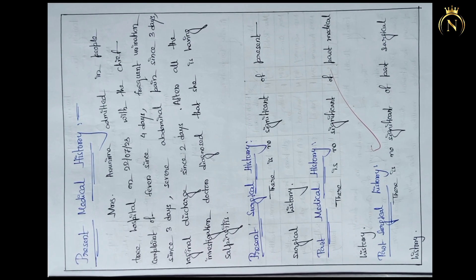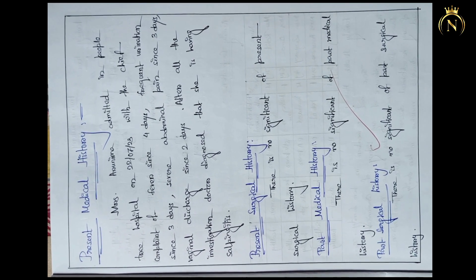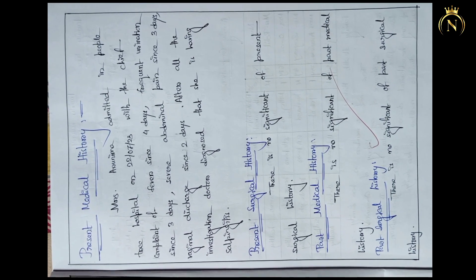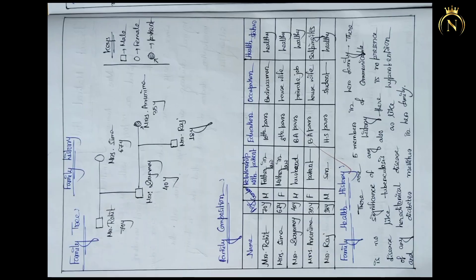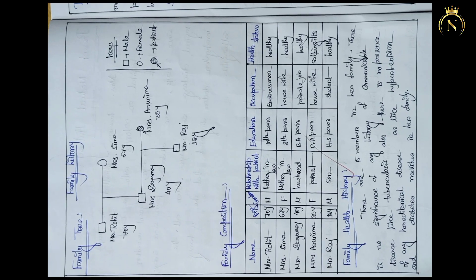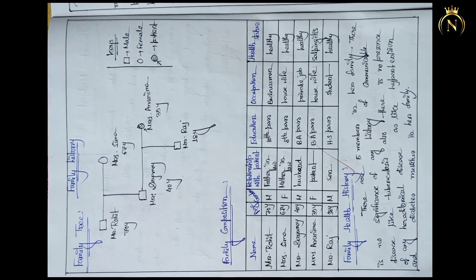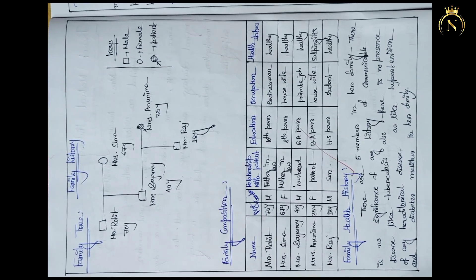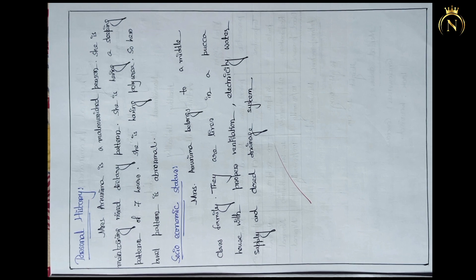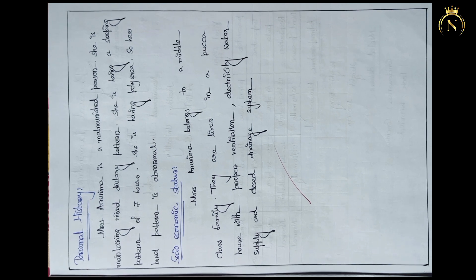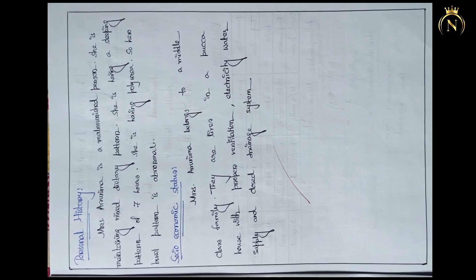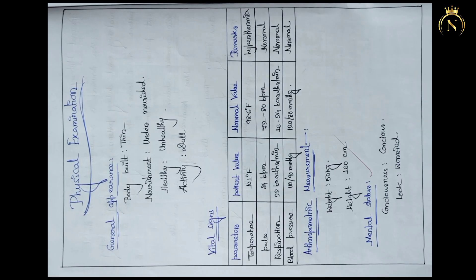You have to write the patient profile as well as the past patient medical and surgical history. Then family history, family tree, family composition, family health history, personal history, and socioeconomic history should also be mentioned.